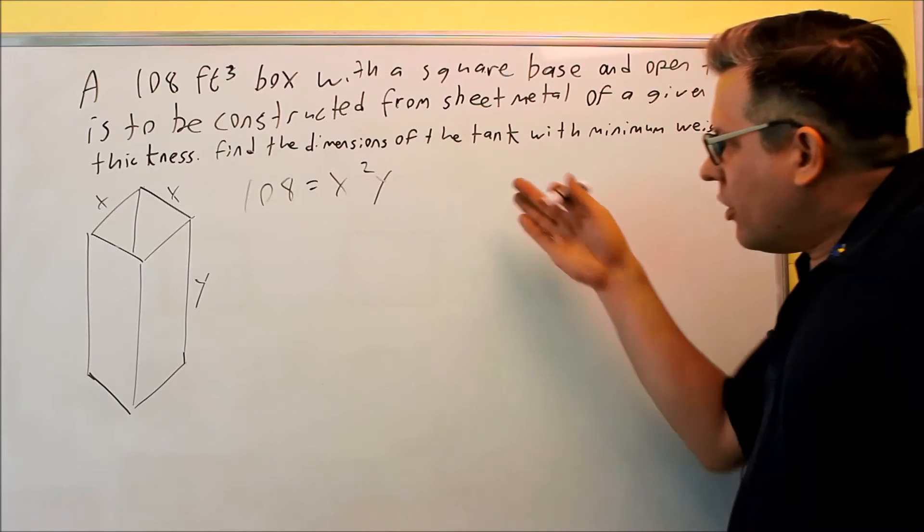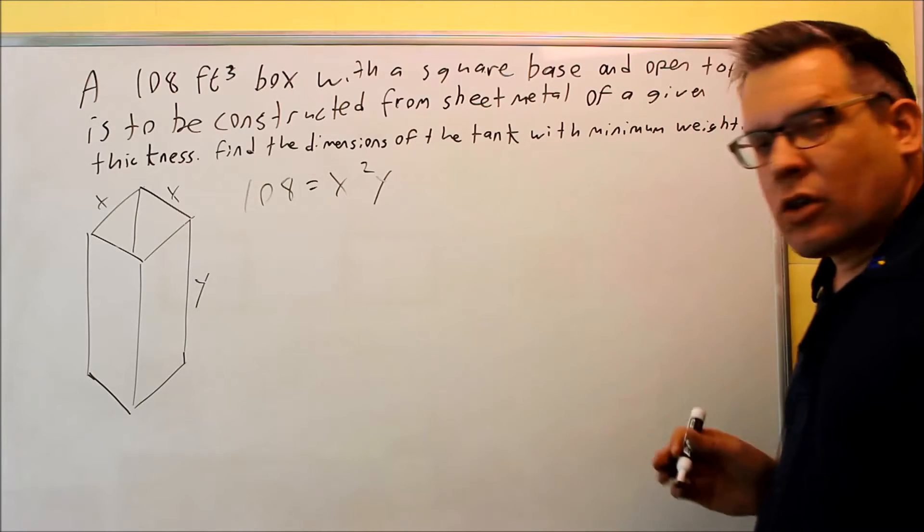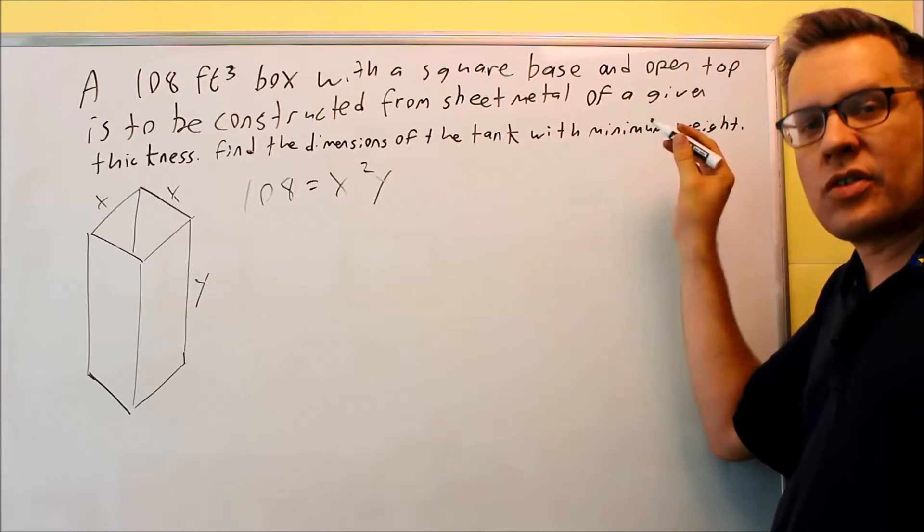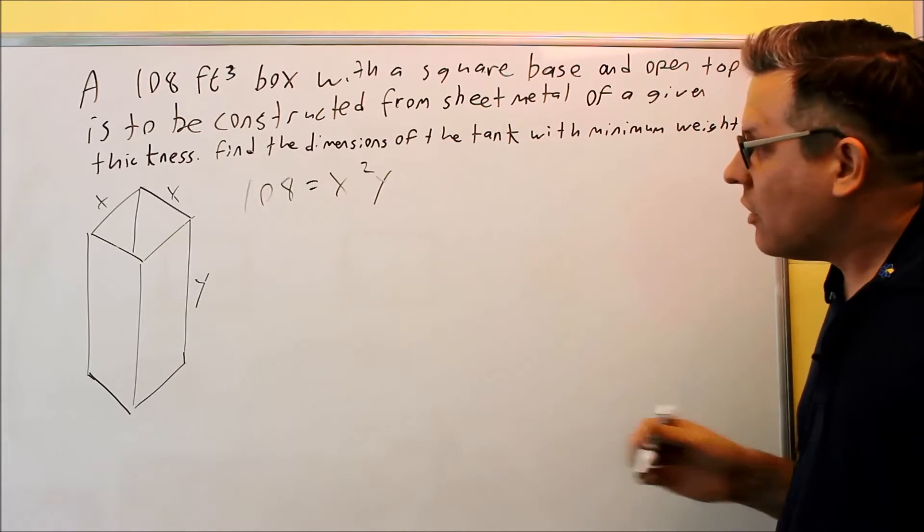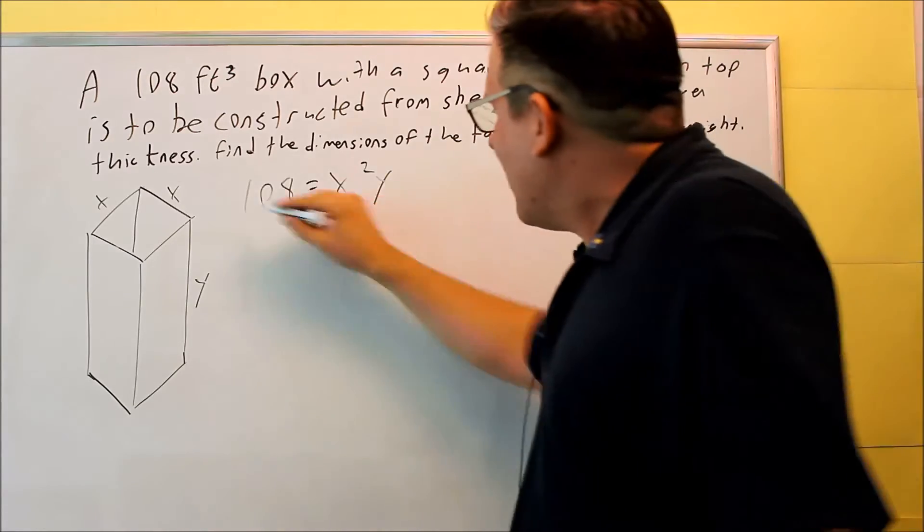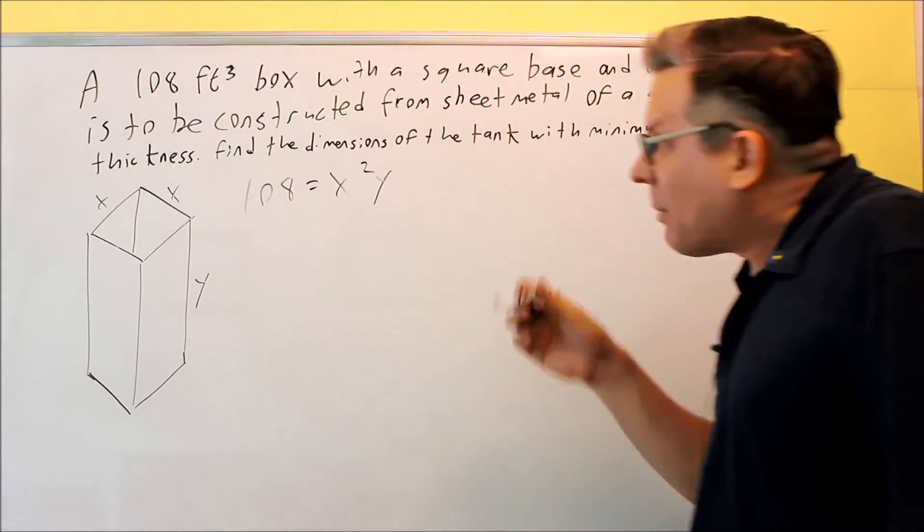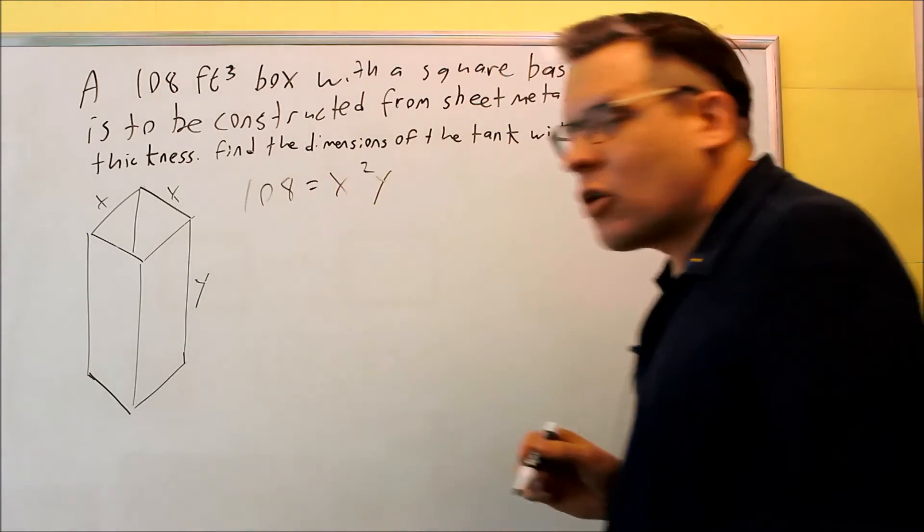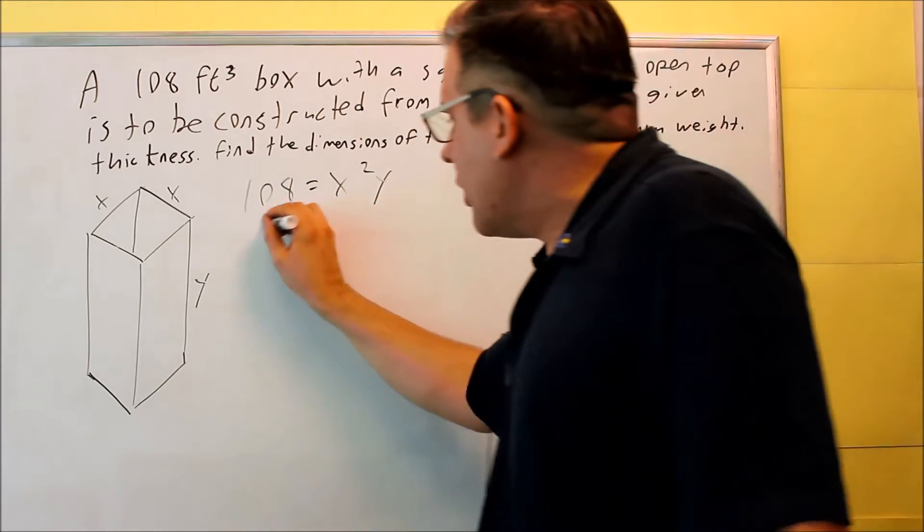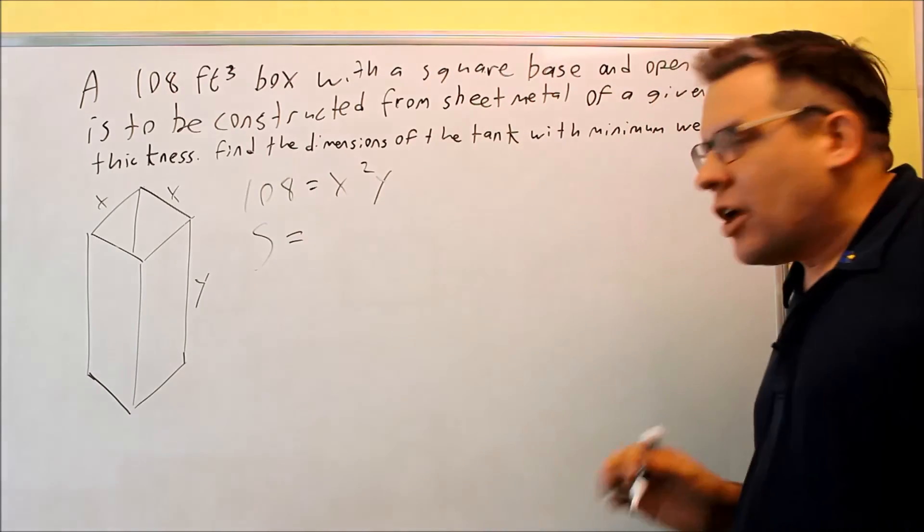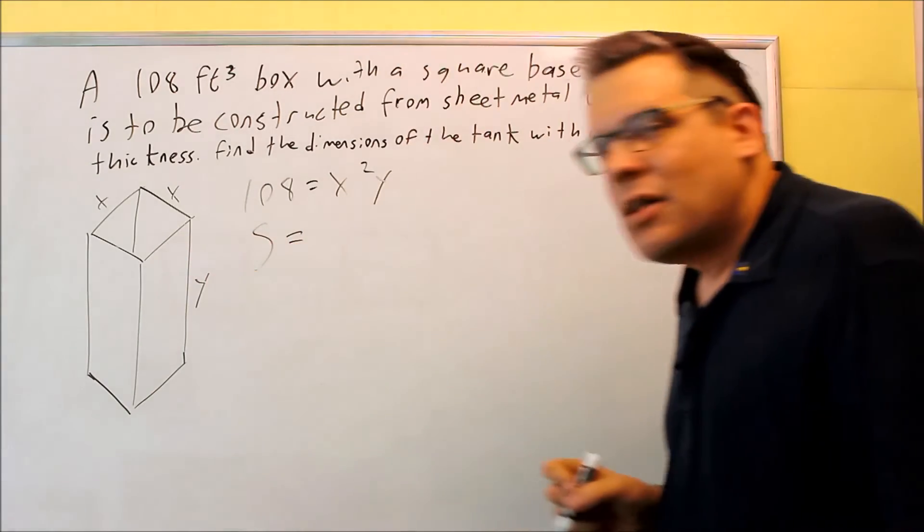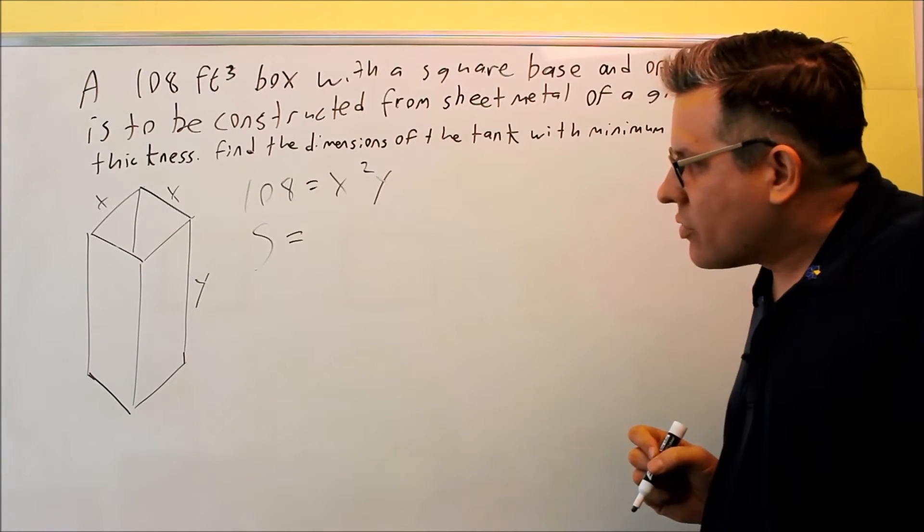The other one is we have to come up with an equation for surface area because I mentioned before that minimizing surface area will be minimum weight for the whole problem. We probably have to use 108 somewhere, so that's the first equation. Now let's come up with an equation for the surface area. We'll call that S. Now you don't have to know the surface area formula. We can just get it directly from this picture, and that's why I decided to draw this.